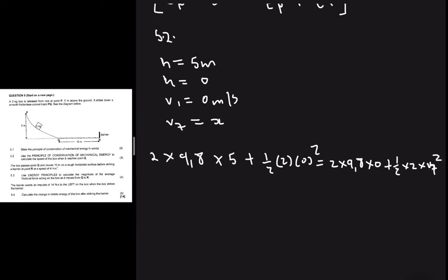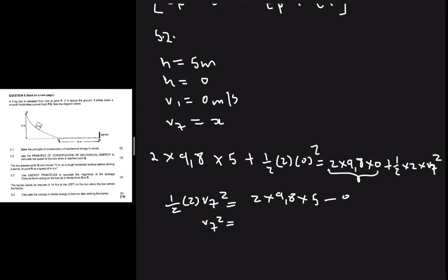We are only left with one variable, so we rearrange the equation. We get one-half multiplied by 2 times vf squared equals 2 multiplied by 9.8 multiplied by 5, minus the zero expression which falls off. The next step is to divide both sides by one-half multiplied by 2, which simplifies to vf squared equals 2 multiplied by 9.8 multiplied by 5, since 2 divided by 2 times one-half is just 1.